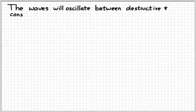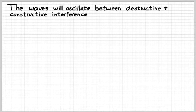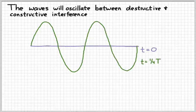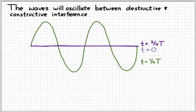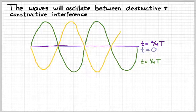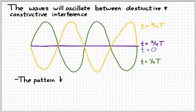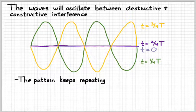The waves are going to oscillate back and forth between the first picture and the second picture — going from constructive interference to destructive interference and back again. At t equals zero the wave is a flat line; at one-fourth period it's constructive interference; at one-half period we're back to destructive interference; at three-fourths period we're back to constructive interference but shifted half a wavelength. This pattern keeps repeating every period, and we call this a standing wave.